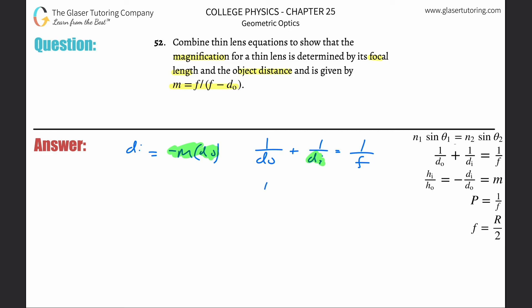So then this becomes now one over do plus then one over now negative, and this is negative mdo. This is mdo.